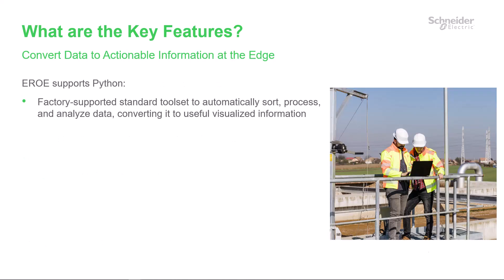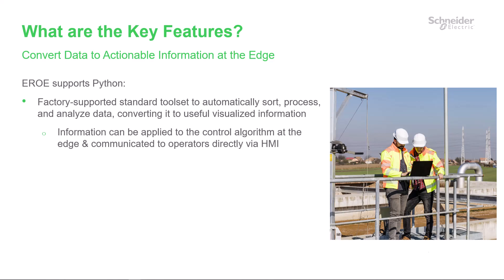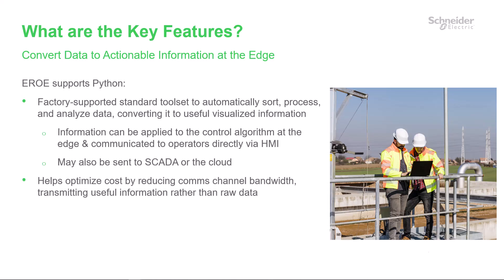To help convert remote site data into actionable information at the edge, Aero supports Python. This provides a factory-supported standard toolset to automatically support, process, and analyze data, allowing it to be converted to useful visualized information. That information can then be applied to the control algorithm at the edge and communicated to operators directly via HMI, sent to SCADA or to the cloud. This helps optimize cost by reducing communication channel bandwidth required, transmitting useful information rather than raw data.